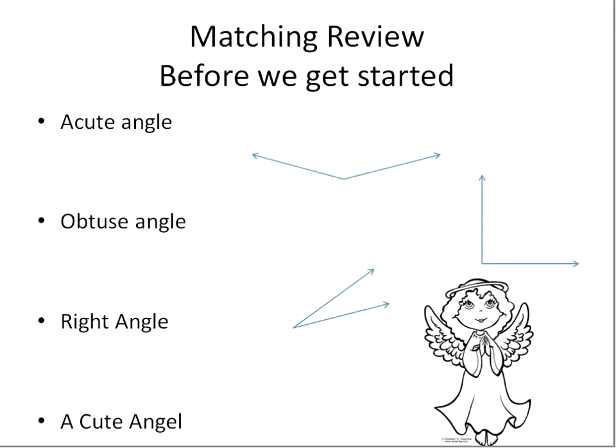An acute angle will look like this — any angle that's less than 90 degrees. An obtuse angle will look like that, an angle larger than 90 degrees but less than 180 degrees. A right angle is right there — it's a 90 degree angle.